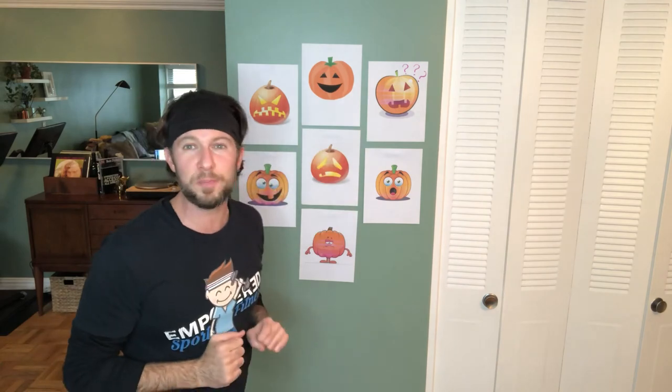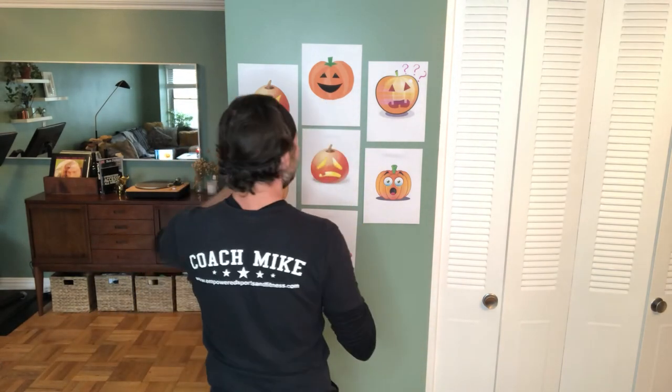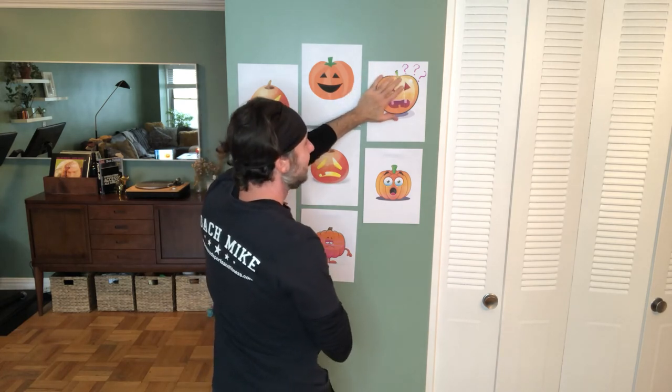So you can have your athlete reach, with their left hand, to find the confused pumpkin. If they're facing the board, they have to reach across their midline with their left hand to touch the confused pumpkin. You can do this game at home with your athletes and add any kind of component you want. This is just a scaffolding to get you started at home and having fun. Remember to keep moving, keep playing, and always have fun. I will see you next time.